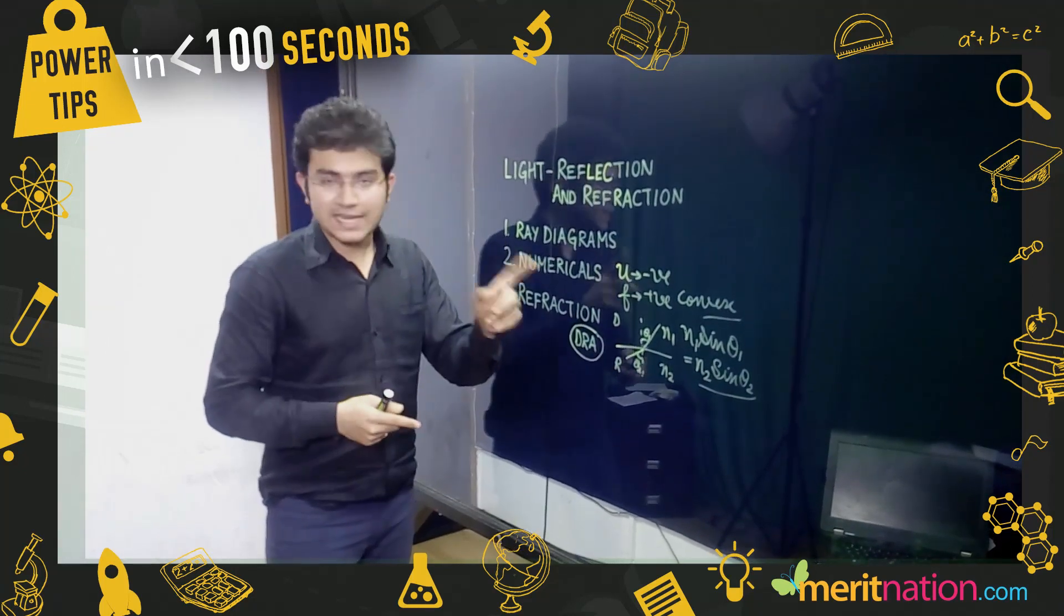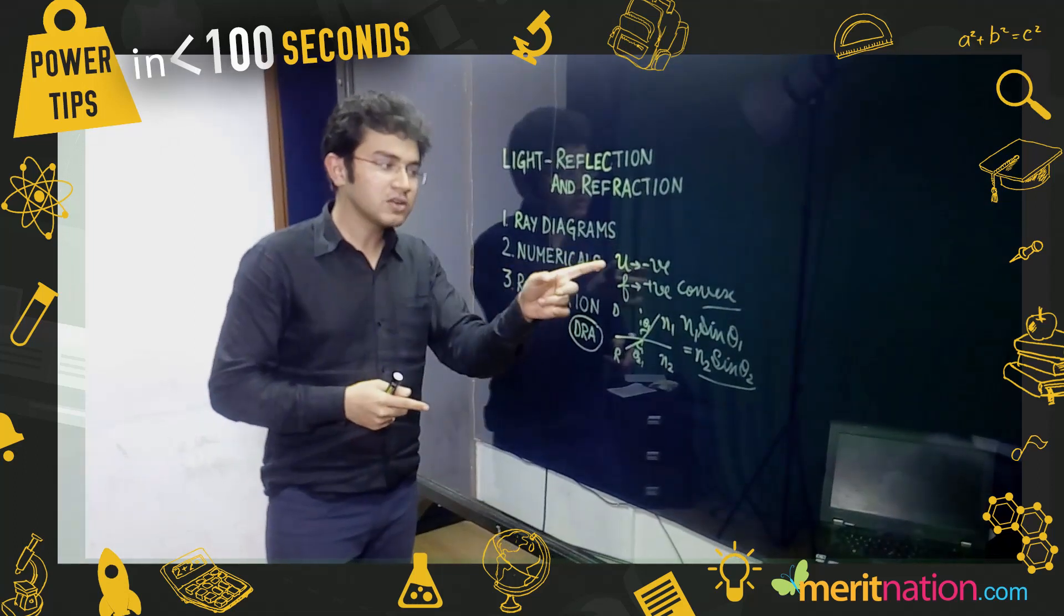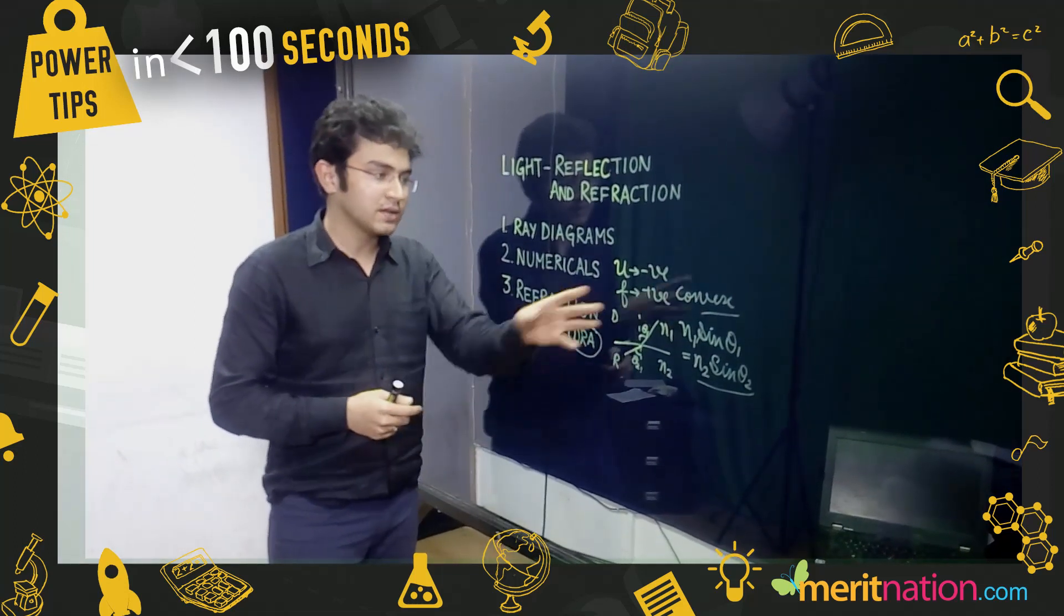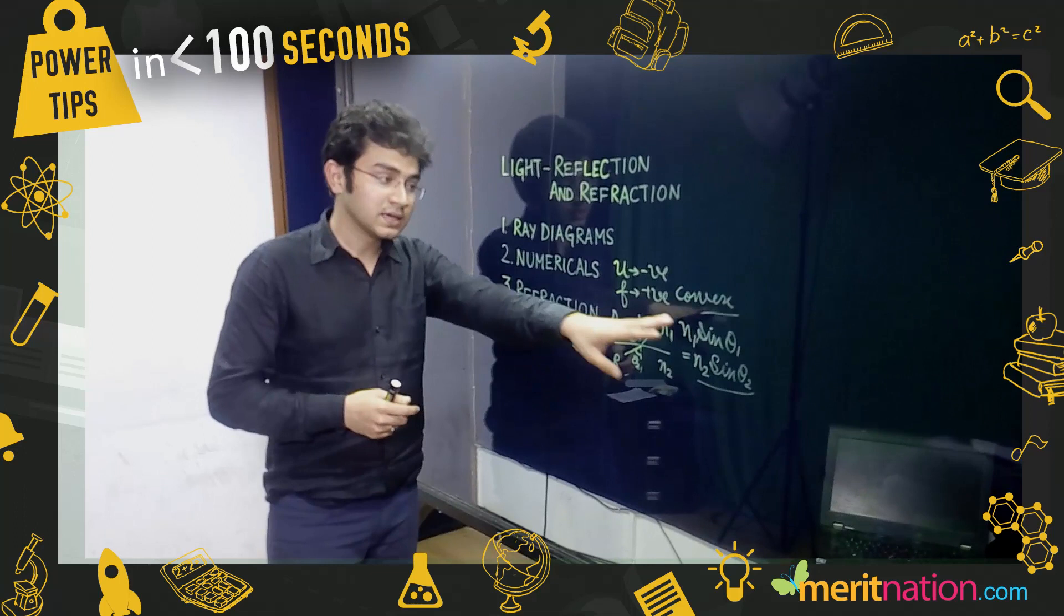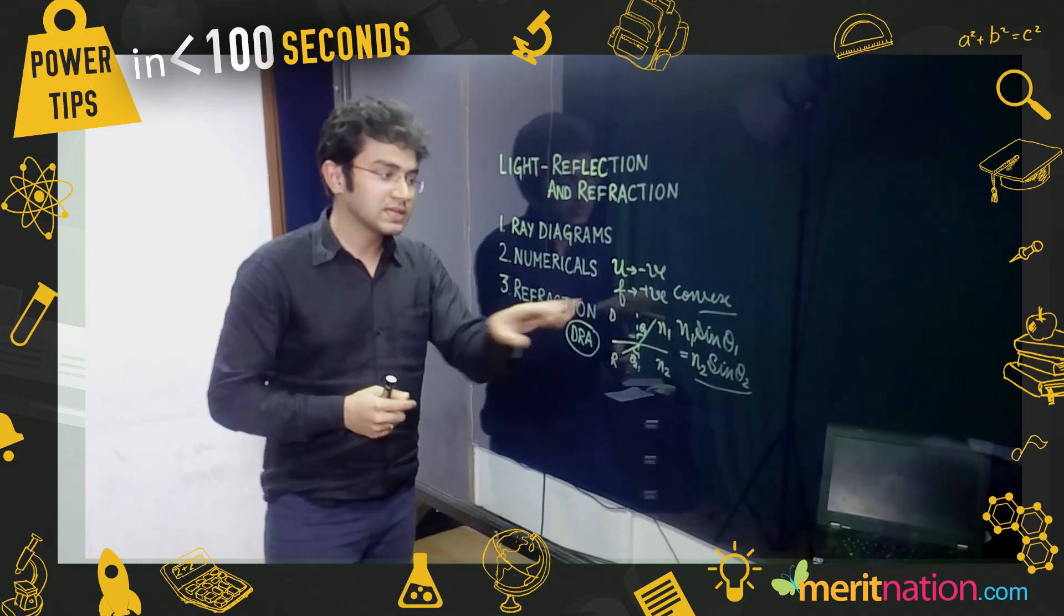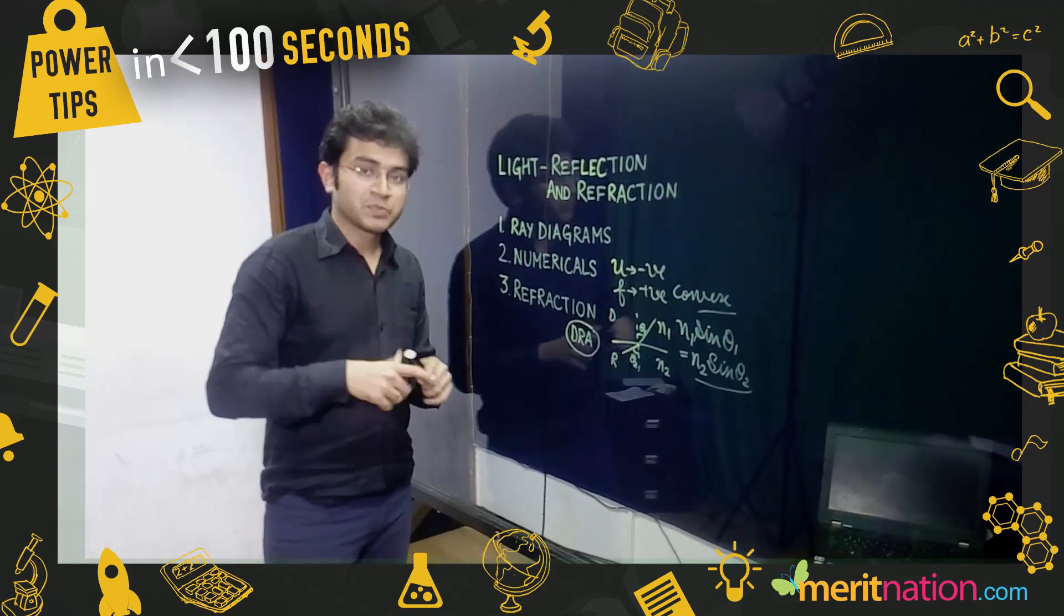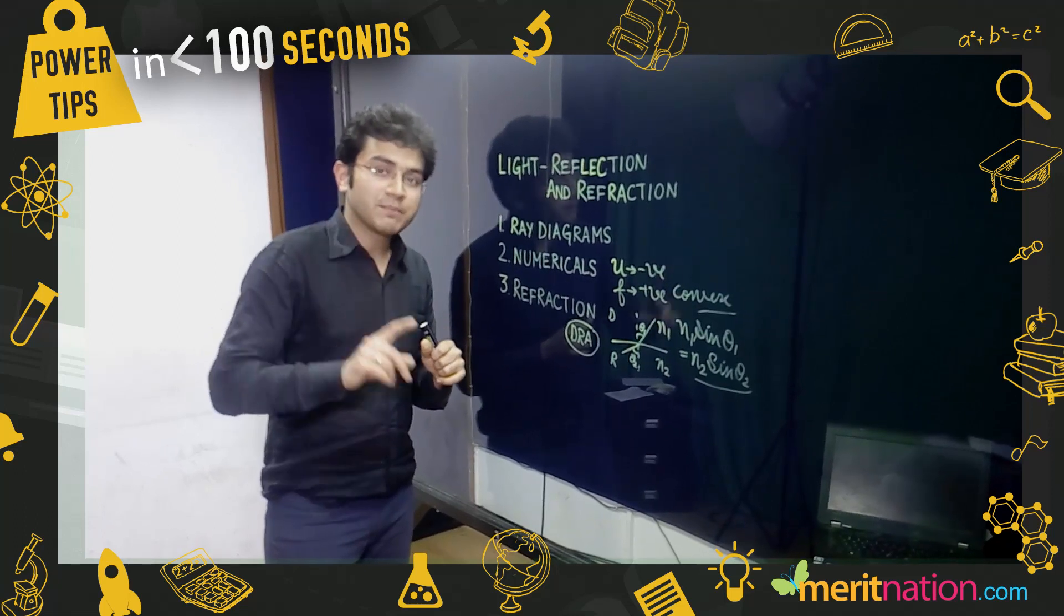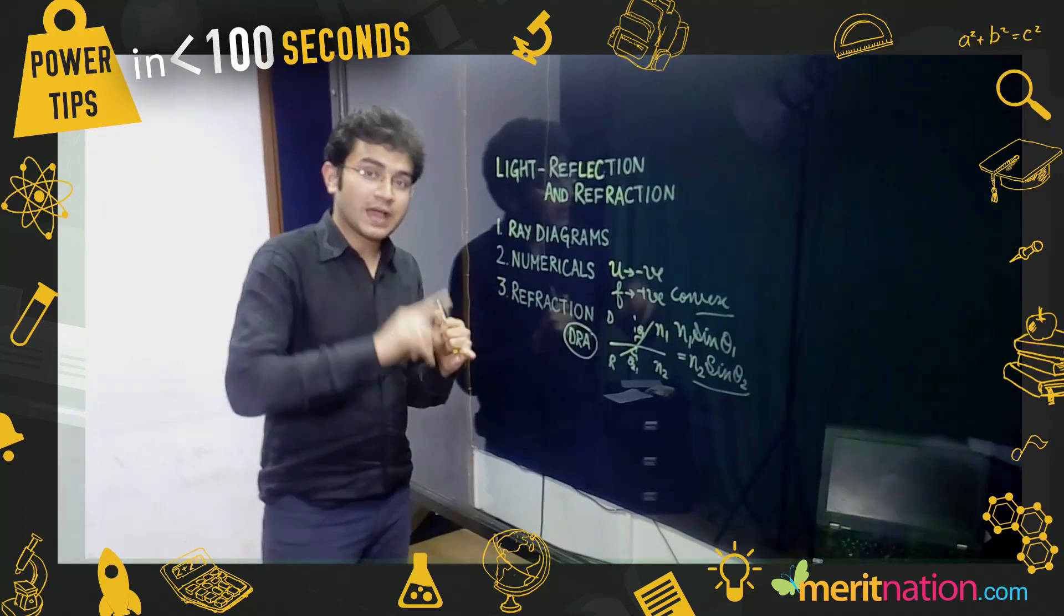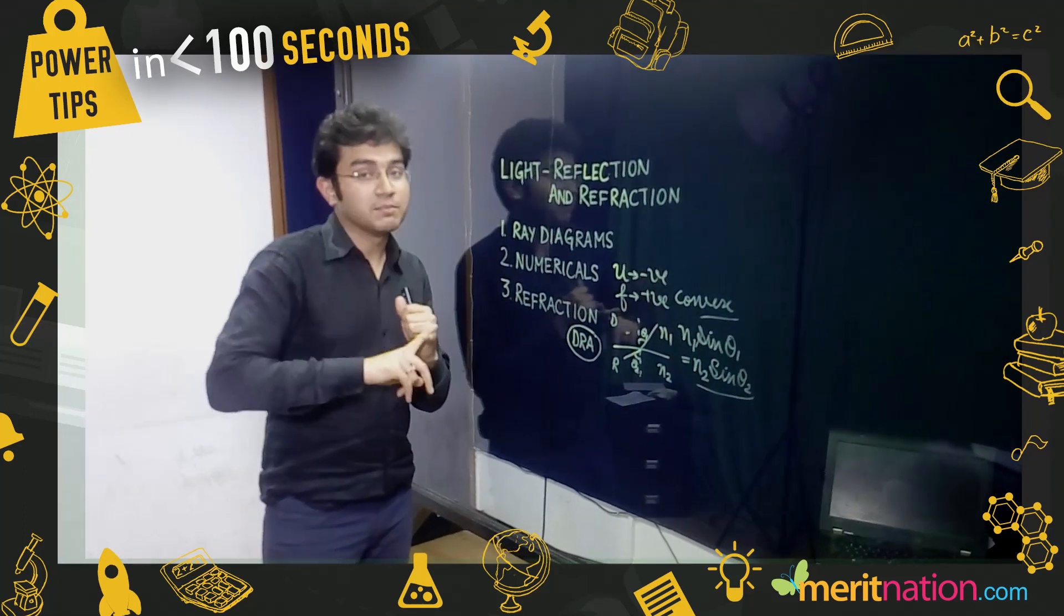Sign convention is very important. For a real object, u is always negative. Whether you have a lens or mirror, if it's convex, focal length is always positive. Remember: lens formula has a minus sign, mirror formula has a plus sign. Don't make a mistake there.